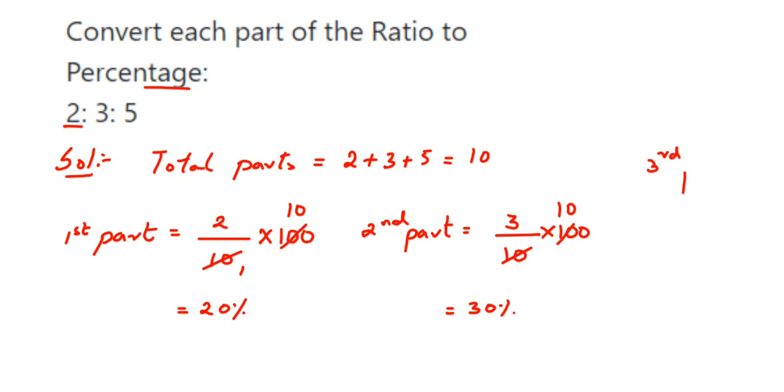Now the third part, same thing. So out of 10, it is five portions or five parts are the third one. So again multiply with 100. So 10 and 100 will get cancelled, we'll get 10. So 5 into 10 is 50, so we got 50 percentage.